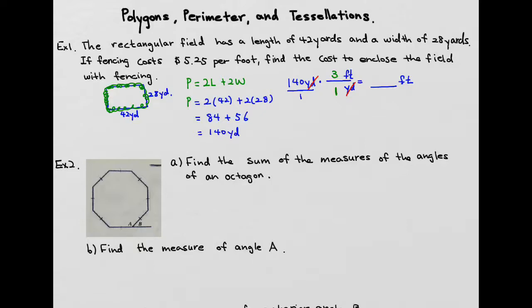And it means that you end up multiplying three into 140, which you will get 420. So 140 yards becomes 420 feet.